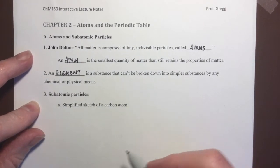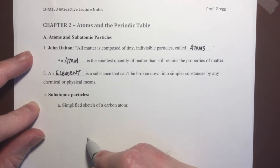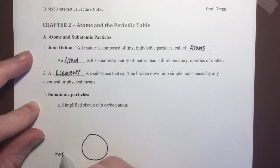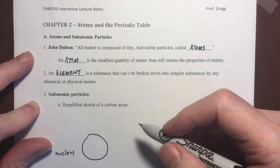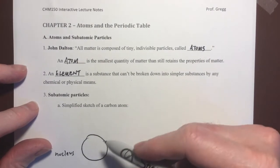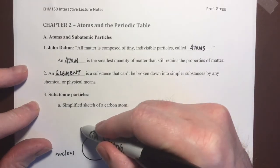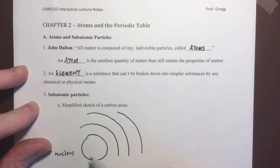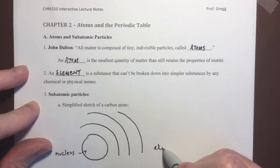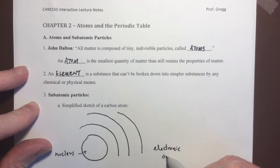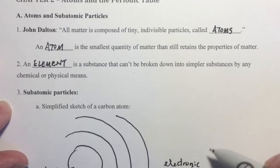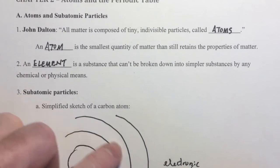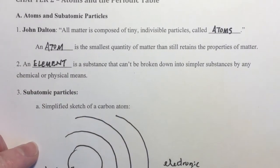I'm going to make a simplified sketch of a carbon atom. Just as a reminder, we have a nucleus, and I'm going to draw it really large here. This is the nucleus, and there are many ways, many models, ways to sketch an atom, but I'm going to just draw a few of the electronic orbitals around this nucleus.